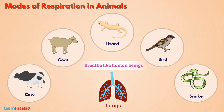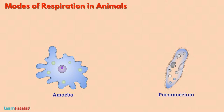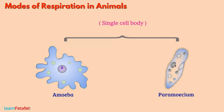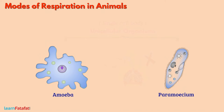There are other animals which breathe in different ways. Let's understand how other animals breathe. The organisms such as amoeba and paramecium, which have a single-cell body, are unicellular organisms. They do not have a specific breathing system like human beings. They breathe by a process called diffusion.